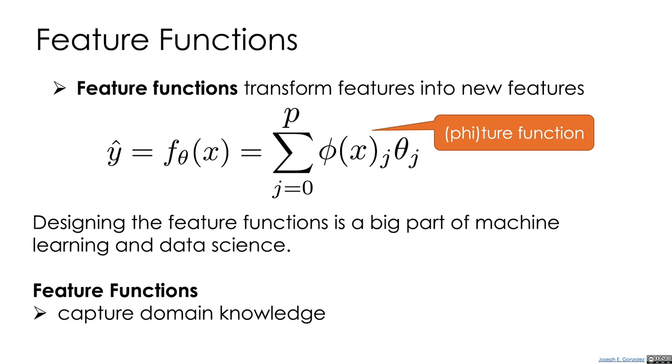We might believe that if we're trying to predict how much a customer might spend on our website, it might not matter exactly which point in the day they're purchasing. It might really matter, is that in the morning or in the evening? So transforming our data from a timestamp to an indicator whether it's morning or evening might actually lead to a better model.